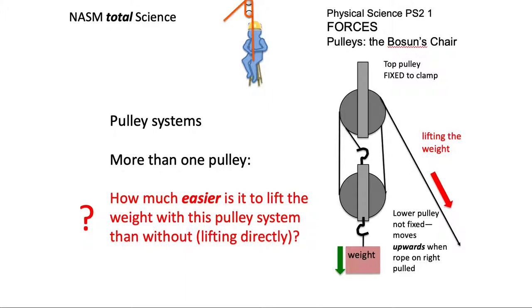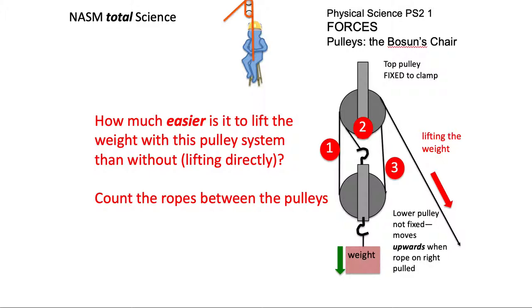How much easier with more than one pulley system? Count the ropes between the pulleys, and look at number two there, the one just shown as a shorter rope holding the two pulleys together, you count that as well. So here there are three, so using a pulley system it's three times easier.